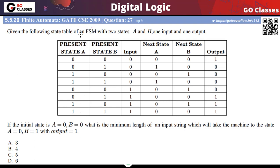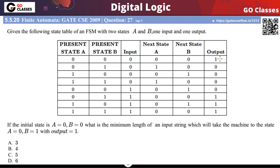This is a GATE 2009 question about a finite state machine where the state table is given. A finite state machine can be represented using a state table or a state diagram. Whenever a state table is given, you can convert it into a state diagram because using a state diagram is much easier. Now, is this a Mealy machine or a Moore machine?